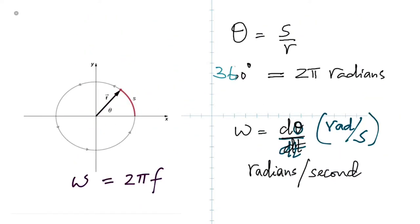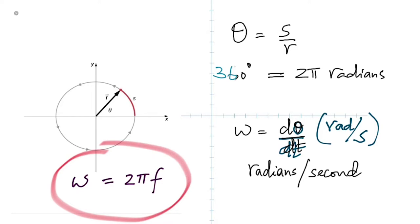Here's another important formula — frequency. F stands for frequency. Frequency is the rotations per second, RPS — how many times it rotates in one second.